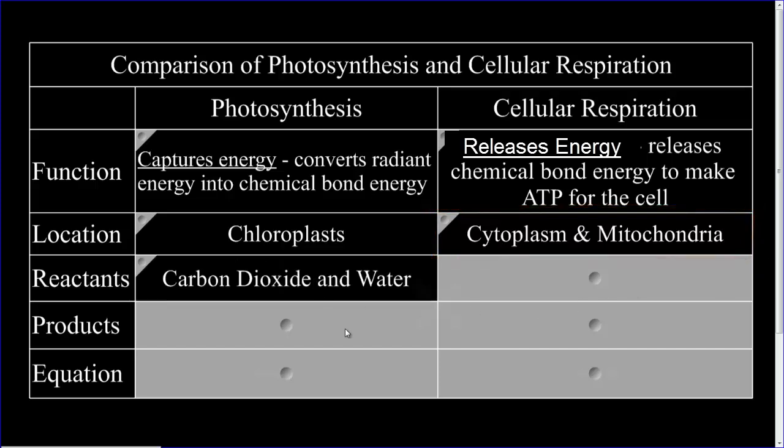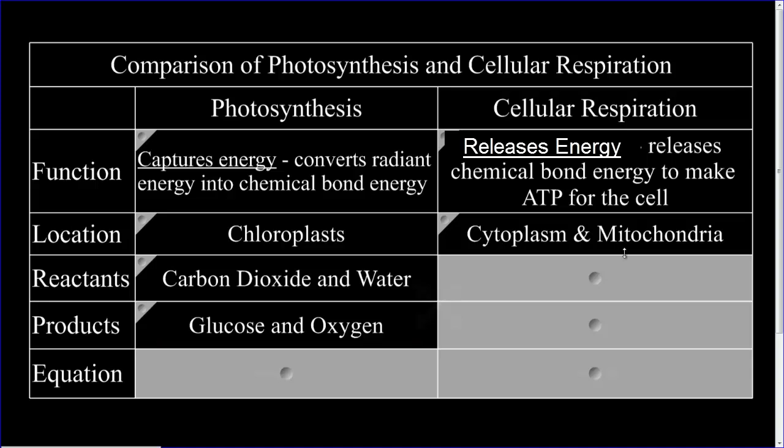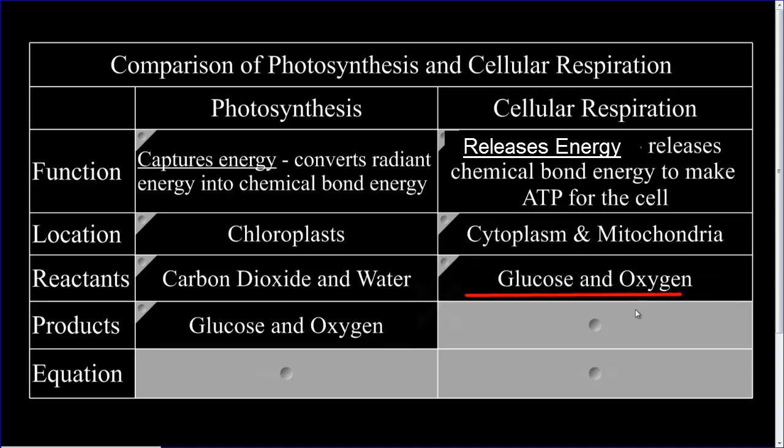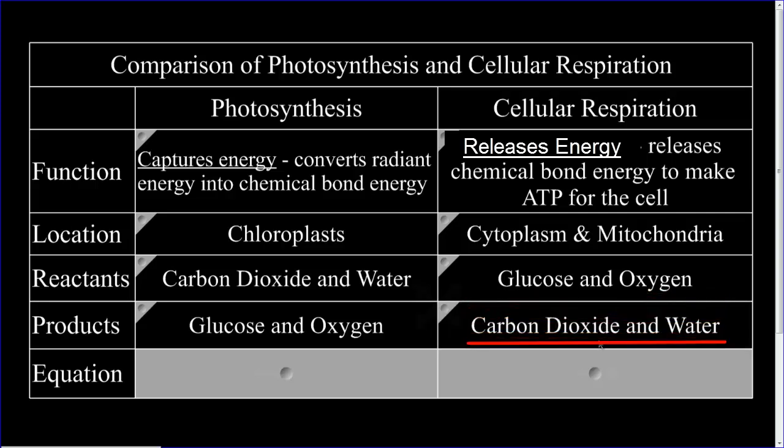The reactants of photosynthesis are carbon dioxide and water, and the products are glucose and oxygen. For cellular respiration, the reactants are glucose and oxygen, and the products are carbon dioxide and water.